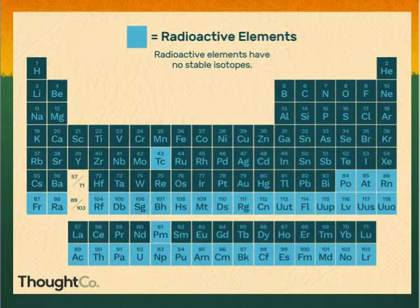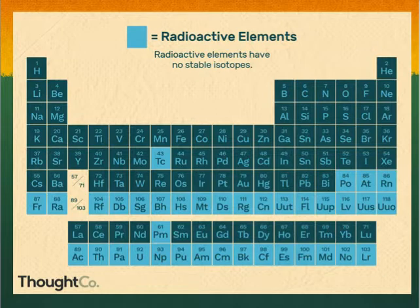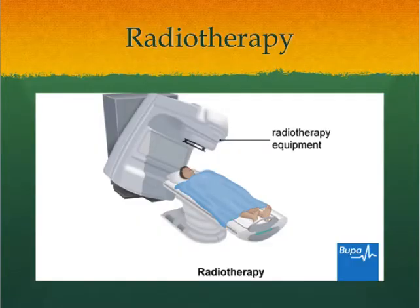For example, uranium and thorium are two radioactive elements found naturally in the Earth's crust. Over billions of years, these two elements slowly change form and produce decay products such as radium. During this process, energy is released — one form of this energy is alpha radiation.